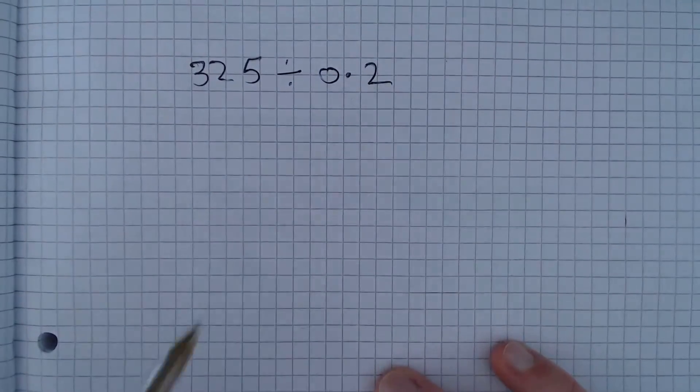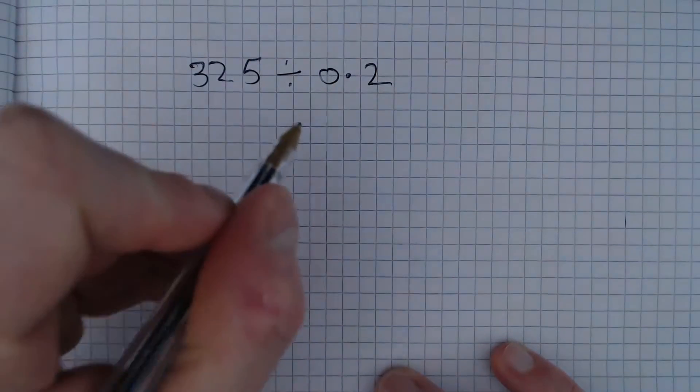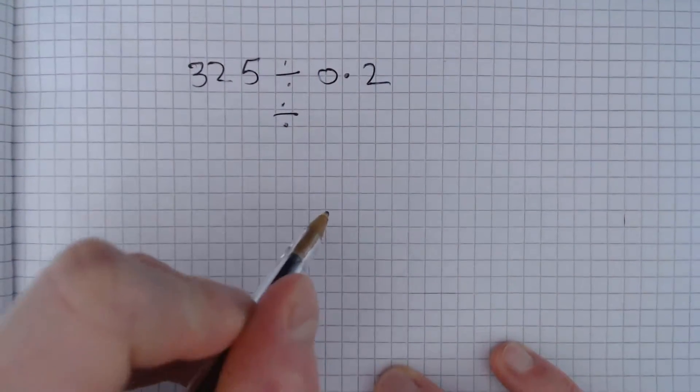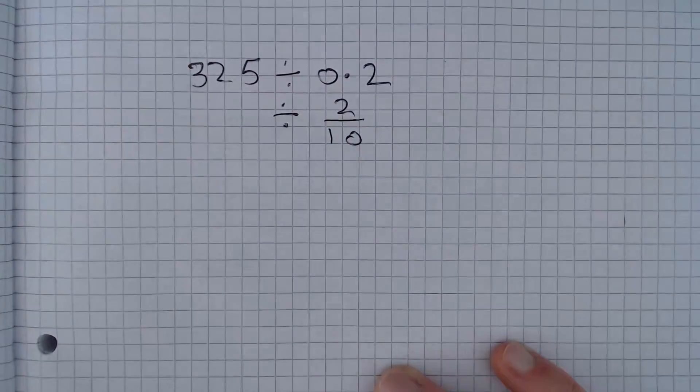Now the way we do this is let's think about converting 0.2 into a fraction. Well, dividing by 0.2 is the same as dividing by 2 over 10 because 0.2 is 2 over 10.